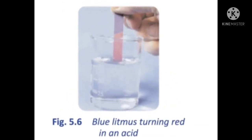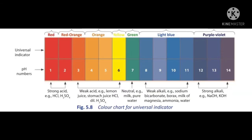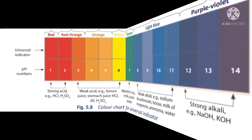Sodium hydroxide, also called caustic soda, is used to manufacture paper and textiles. It is also used in the manufacture of soaps and detergents. Indicators are substances that show a change in color when brought in contact with acids and bases.